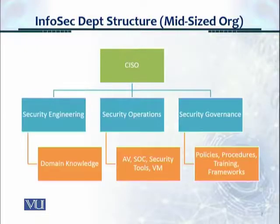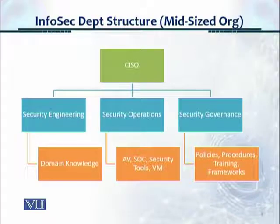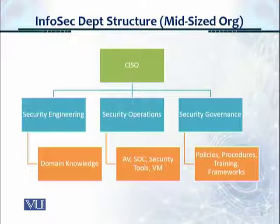The functions are shown in orange. Security engineering covers domain knowledge, so you have a network security resource, an application security resource, a database security resource, and a system security resource.